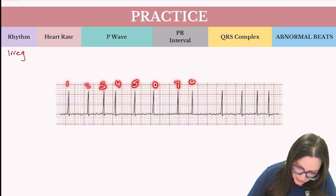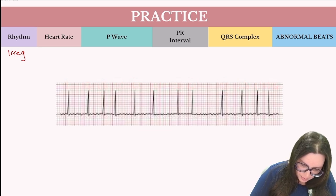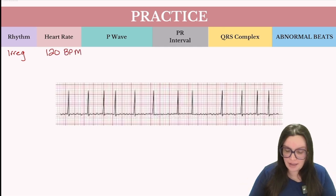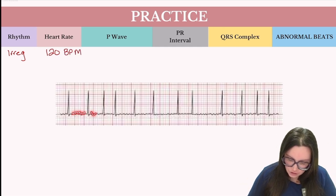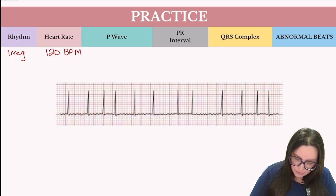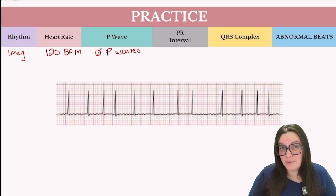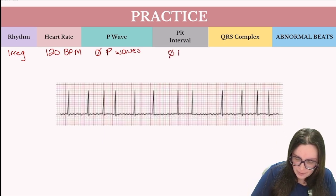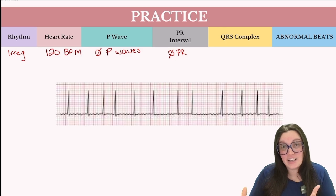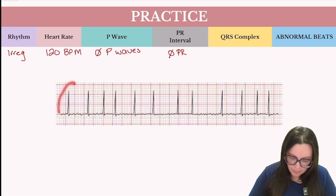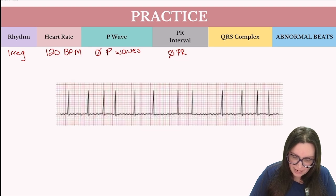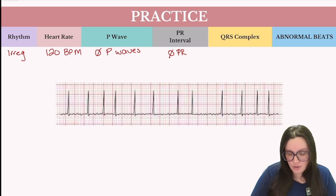So we have a total of 12 QRS complexes, meaning a heart rate of 120 beats per minute. Next, do we have any identical P waves? As you can see here, we just have these fibrillatory lines, so absolutely we do not have any P waves we are able to measure. Because we don't have P waves, we also don't have a PR interval. Looking at our QRS complexes, they are very, very narrow — less than 0.12 seconds. And there are no abnormal beats.